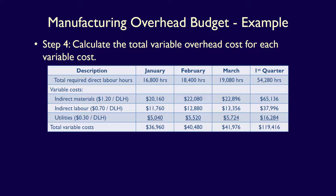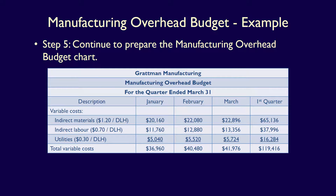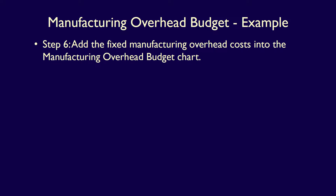We now have all of the variable costs, which means we can move on to step 5, which is to transfer the variable costs into the manufacturing overhead budget. Notice that we did not transfer the direct labour hour row into the budget – at least, not yet. This budget will be quite large, but we've not even started on the fixed costs, which is step 6.